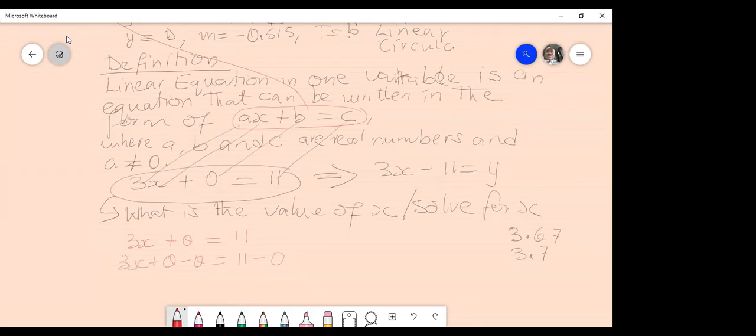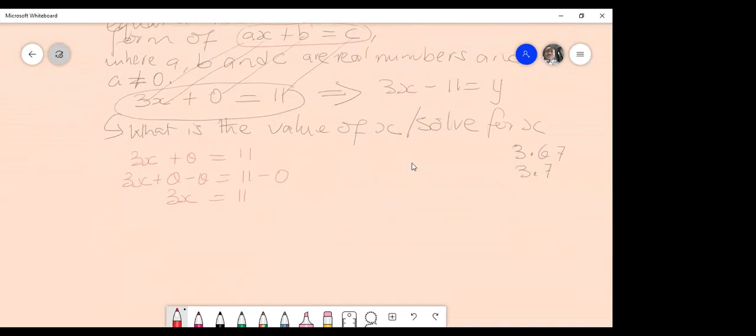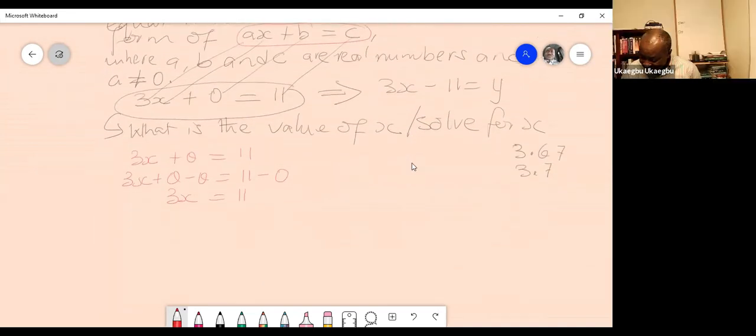Okay. Go ahead. Equals 11. Three X is equal to 11. And then what? Divide by three for both sides. Divide both sides by three.